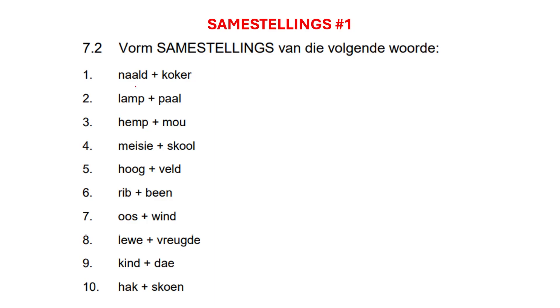So 'naal' and 'koker' — this is the one where you have to add an 'e' between. So it will become 'naaldekoker', one word. And 'naaldekoker' is actually a dragonfly.